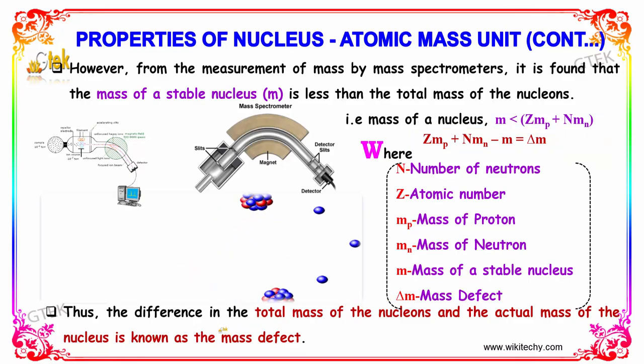Thus, the difference in the total mass of the nucleons and the actual mass of the nucleus is referred to as mass defect.